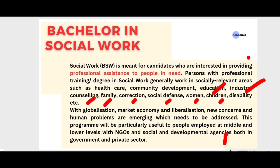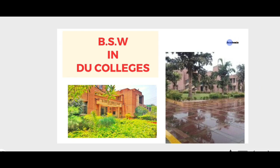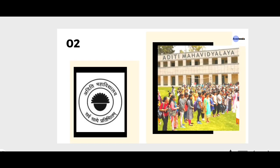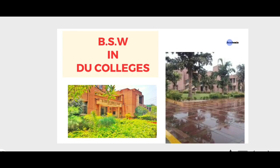Now we will talk about where to study this subject. In Delhi University (DU), there are two colleges offering Bachelor in Social Work. The first is Dr. Bhimrao Ambedkar College, and the second is Aditi Mahavidyalaya, which is specifically for girls. Social work is available as a graduation subject in both. For Master's (MSW), the Delhi School of Social Work is the college in DU.